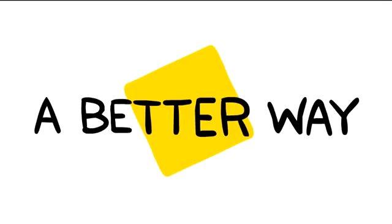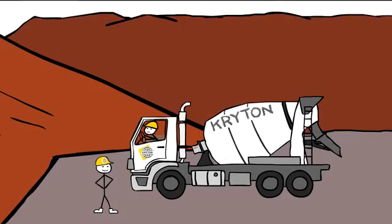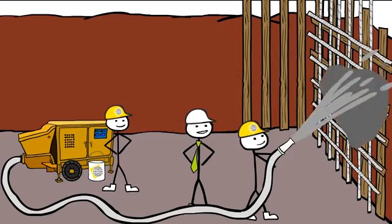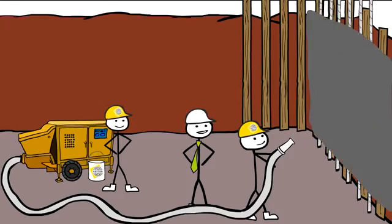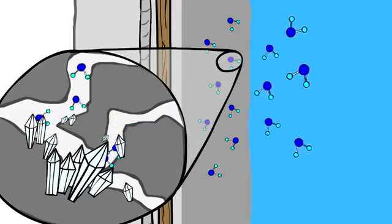Use Kim waterproofing admixture instead of a membrane. Kim is mixed into the shotcrete itself and becomes a permanent part of the structure. Eliminate risk of damage or deterioration to your waterproofing solution.